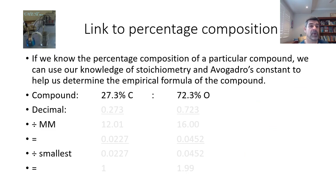One of the important things is that if we know the percentage composition for a particular compound, we can use stoichiometry and Avogadro's constant to help us determine the empirical formula of the compound. We need to very much use the mole concept as we are seeking to solve these sorts of problems.